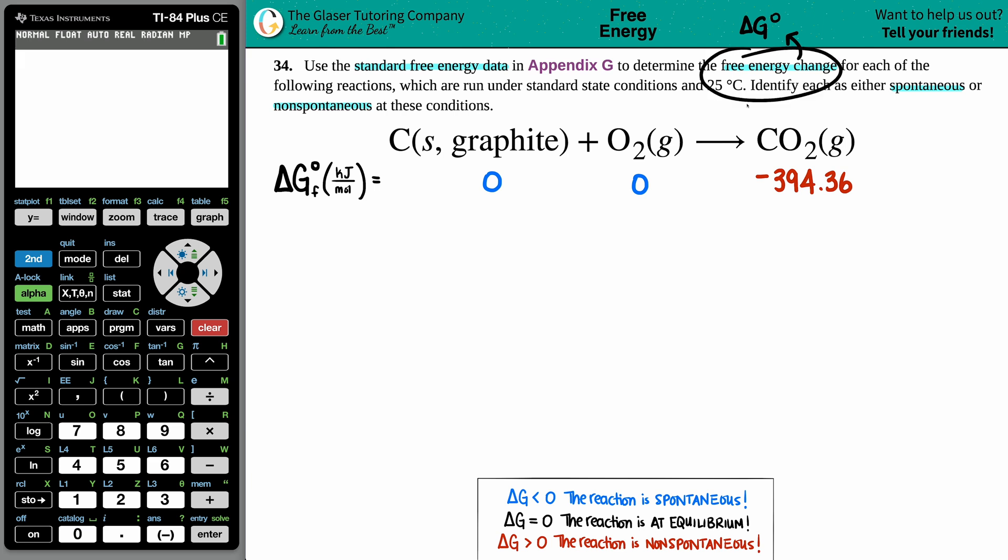From here, how are we going to find that change? The equation is pretty simple when you have all ΔG values. You're going to use this formula: ΔG°rxn = Σ ΔG°products - Σ ΔG°reactants. When you're summing something up, you're adding all your products and subtracting the sum of all your reactants.